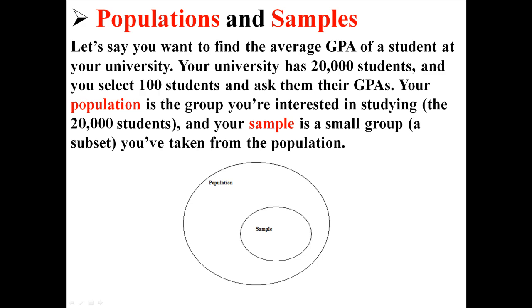So let's say you want to find the average GPA of a student at your university. Your university has 20,000 students, and you randomly select 100 of them and ask them what their GPA is. In this case, the group that you're interested in studying, your population, is that 20,000 students, and your sample is that smaller group of 100 students that you've taken from the population.